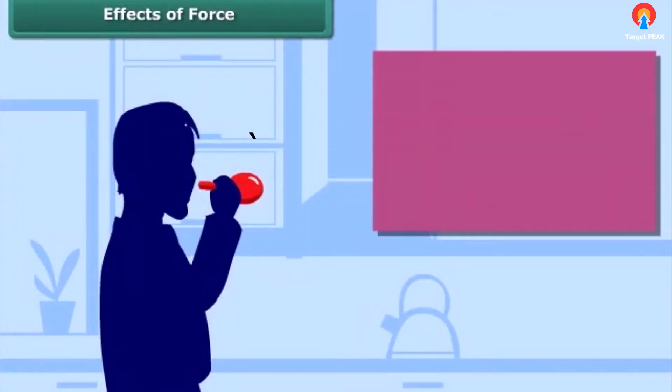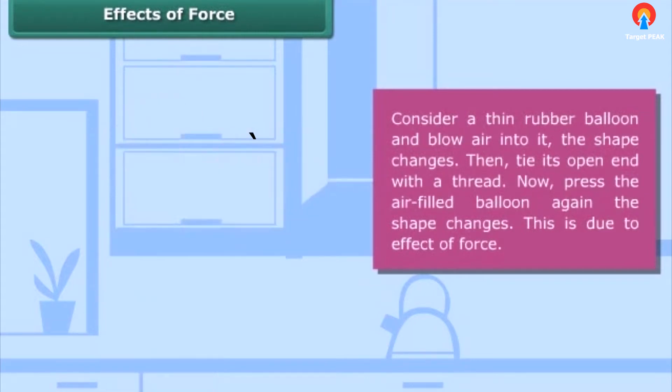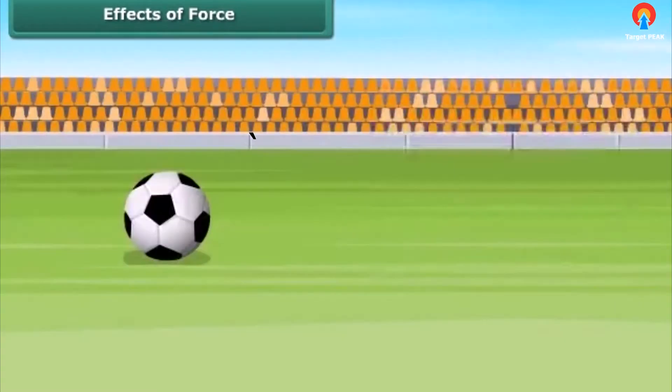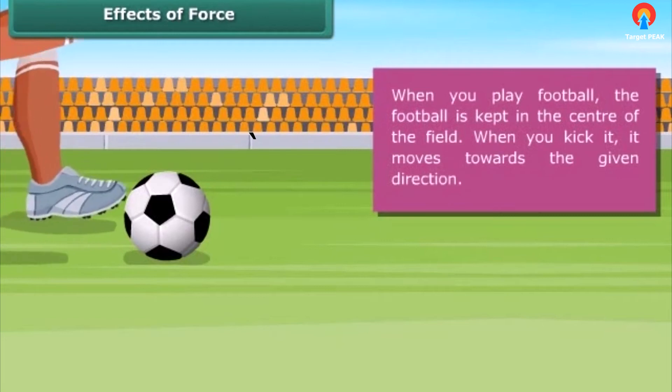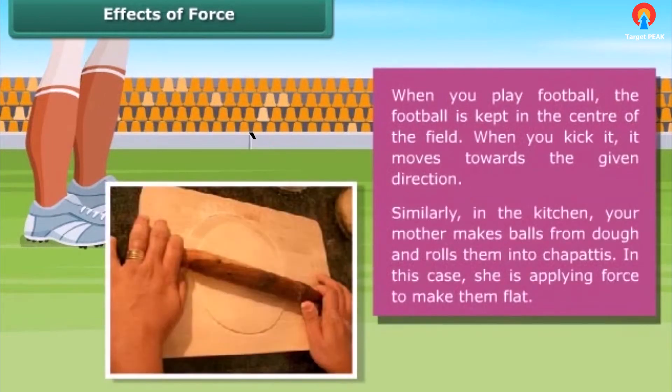Effects of force: Consider a thin rubber balloon and blow air into it - the shape changes. Then tie the open end with thread. Now press the air-filled balloon - you will see again the shape changes. This is due to the effect of force. When you play football, the football is kept in the center of the field. When you kick it, it moves towards the given direction. Similarly in the kitchen, your mother makes balls from dough and rolls them into chapatis. In this case, she is applying force to make them flat.